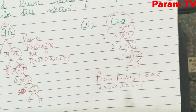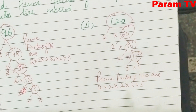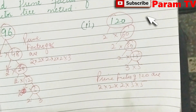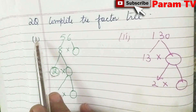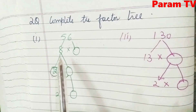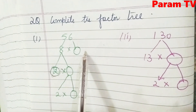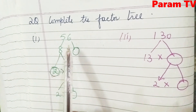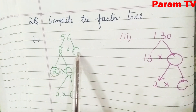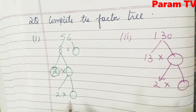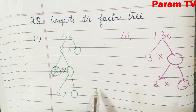Same way, for any number, the method remains the same and you can solve it. Question number 2: complete the factor tree. Here some numbers already have their factor trees partially built with missing numbers — you have to fill those in.